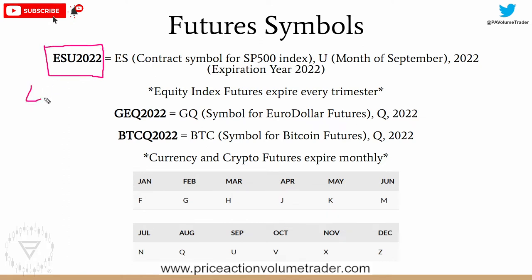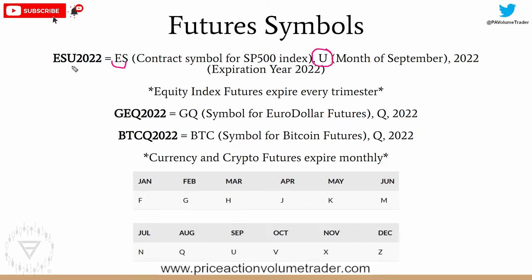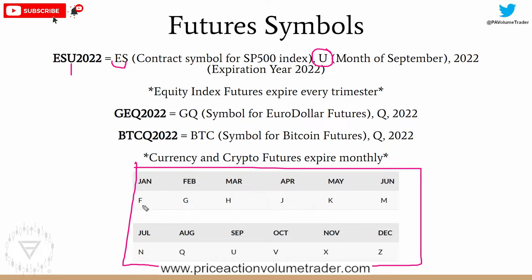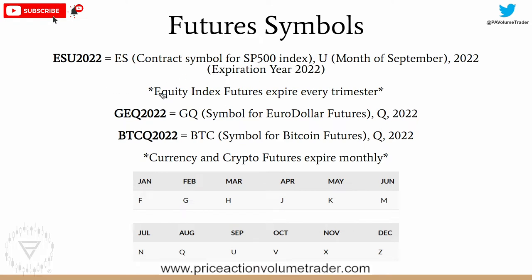Now let's go over how to read a futures symbol. For example, the current contract for the E-mini S&P 500 is the ES contract. The 'ES' part is the symbol for the S&P index. The letter in the middle is based on a calendar where each month of the year has an assigned letter — since this contract expires in September, it has the letter 'U'. Then the last part is just the year of expiration. That's how every futures contract name is structured. Equity indexes expire every three months: March, June, September, and December.